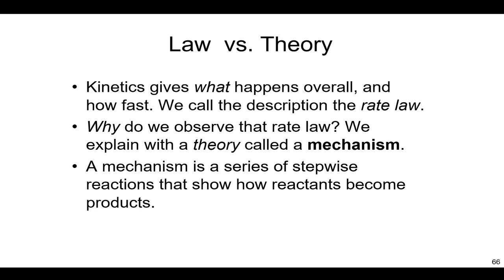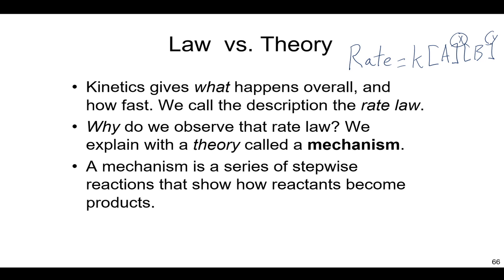Kinetics overall tells us what happens and how fast — how long does it take reactants to go to products? The quantitative description of that is known as the rate law, which looks like: rate equals the rate constant times some concentration of reactants raised to some power. So maybe it's A plus B as the reaction: rate equals k times A to the x times B to the y. We have to figure out what x and y are — the orders of the reaction. That's the vocabulary we've learned thus far.